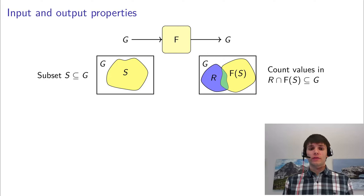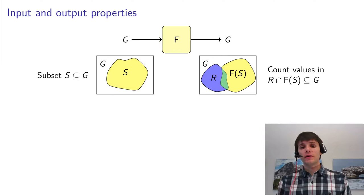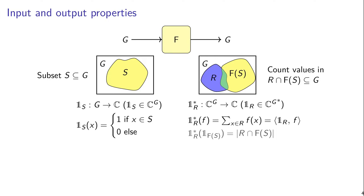This basically boils down to computing the size of the intersection between R and f. Another way to think about this is, instead of using sets, to use indicator functions of sets. So the indicator function of the set S is just a function which is 0 everywhere, except when the input is in the set, then it's 1.